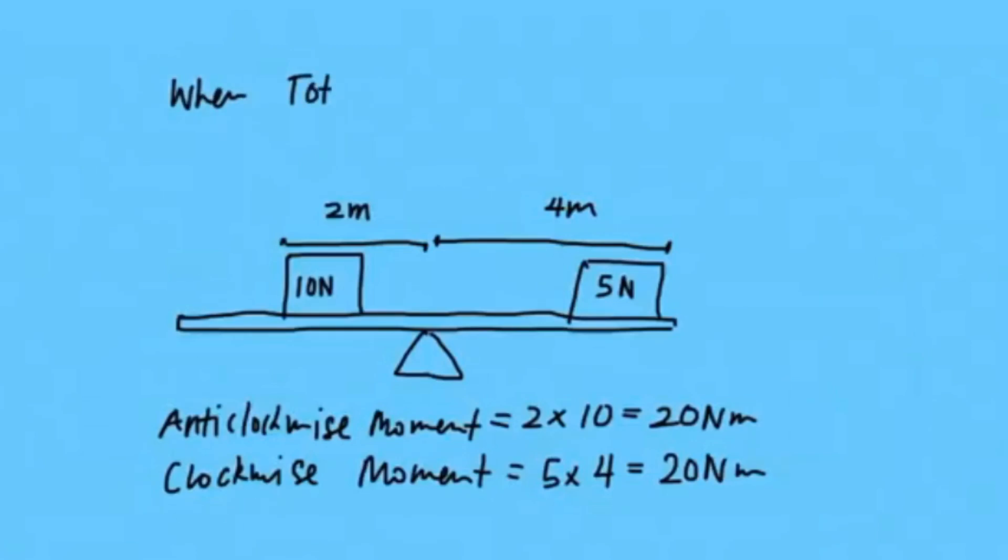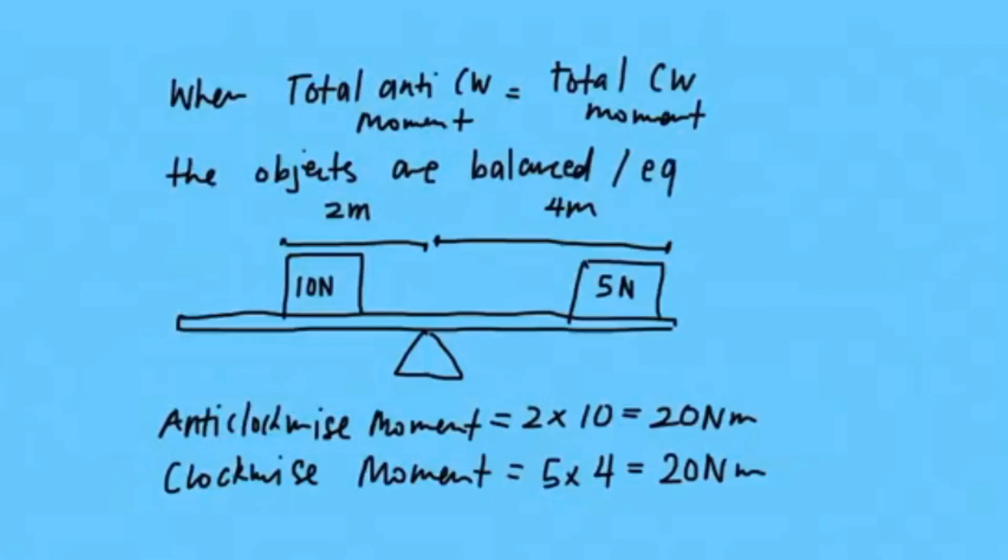So when the total anticlockwise moment equals the total clockwise moment, the objects are balanced or we can say they're at equilibrium.